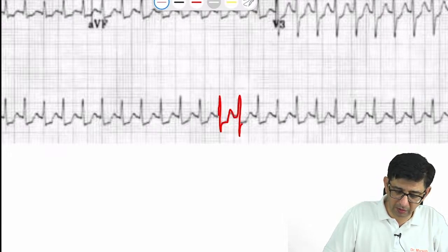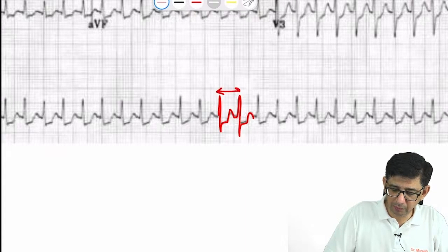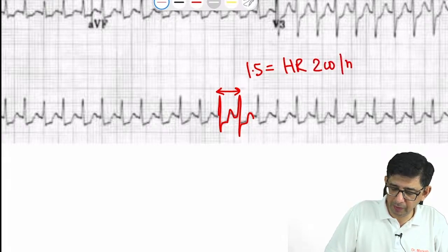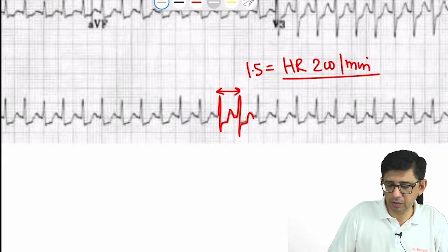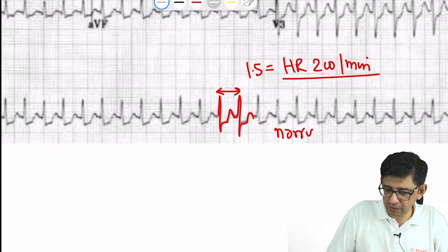The answer in this case would be PSVT. There's about 1.5 large squares separating R to R, so the heart rate is approximately 200 beats per minute. Since it's a narrow QRS complex tachycardia with hidden P waves and ST depression, I'm dealing with PSVT.